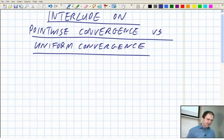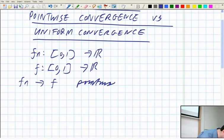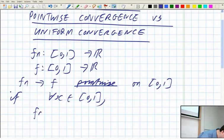Okay, so pointwise convergence. Let's have Fn from [0,1] goes to R, F going from [0,1] to R. If Fn tends to F pointwise, we know what uniform convergence means. It means pointwise on [0,1], if for all x in [0,1], Fn(x) tends to F(x) as n tends to infinity.